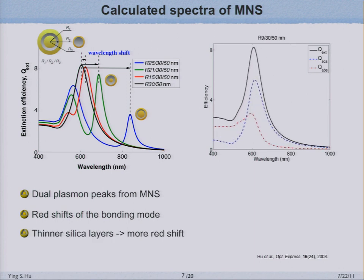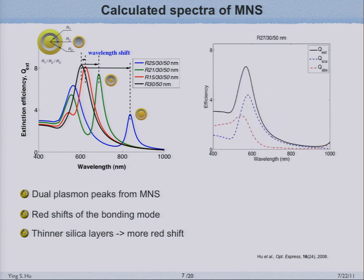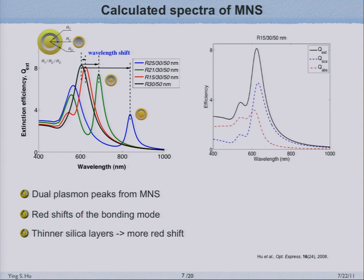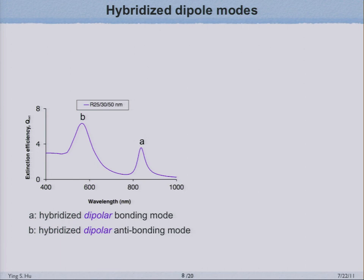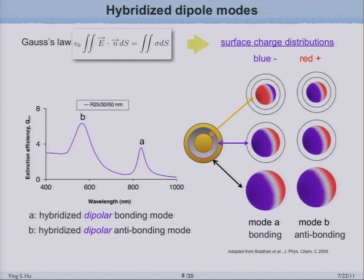We can see that we can redshift the resonance from a conventional nanoshell into the near-infrared region without changing the thickness of the gold shell. Extracting one particular spectrum, we can see the antibonding mode and bonding mode for the multilayer nanoshell. Applying Gauss's law to extract the surface charge distributions on each interface, one key point is that both modes show a dipolar nature—which will be contrasted later with the offset multilayer nanoshell case, where we actually see more complex resonant modes.